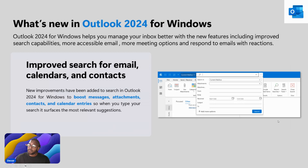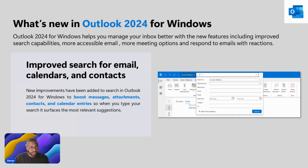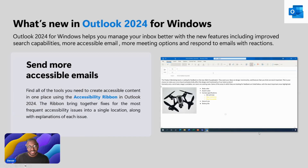For Outlook, you get improved search for emails, calendars, and contacts. It's much more seamless and easier. You can put more information into your search to find things. It's quite straightforward — you don't have to go too much in depth about this.